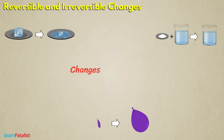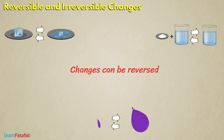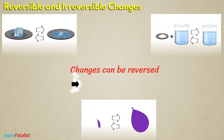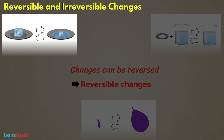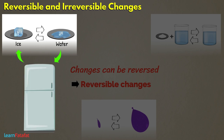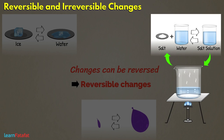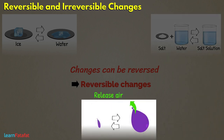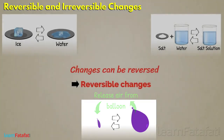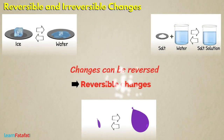Some of the changes can be reversed, i.e., the changes can be undone. Such changes are called reversible changes. For example, we can convert water back into ice by keeping it in the refrigerator. We can separate the salt and water by evaporation. If we release air from the balloon, then it regains its shape. These are all reversible changes.